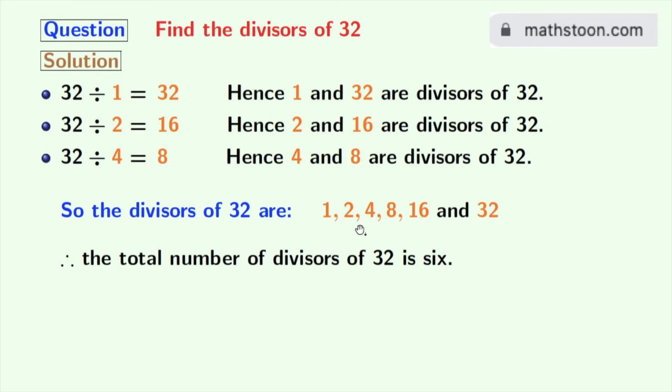Now, if we look at these divisors, we can see that 2 among these numbers is prime number because 2 has no divisor other than 1 and 2 itself. So, the prime divisor of 32 is only 2.